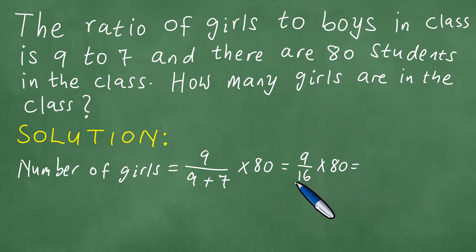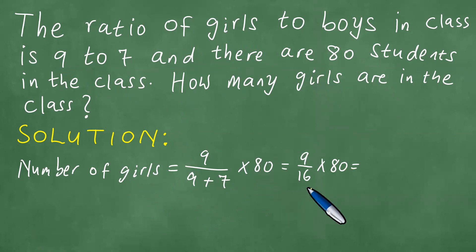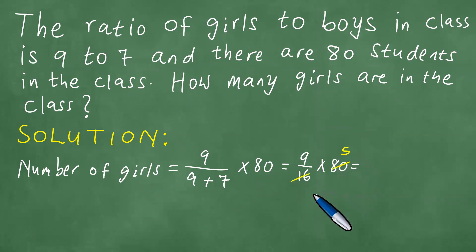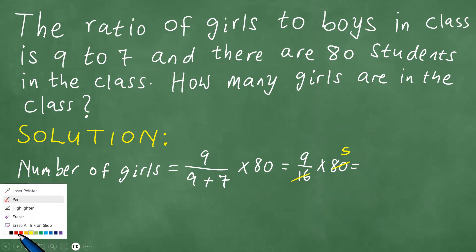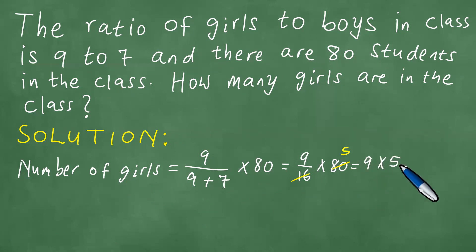If you divide these, you realize that 16 goes 5 times into 80, so that we have 9 by 5, which is 45.